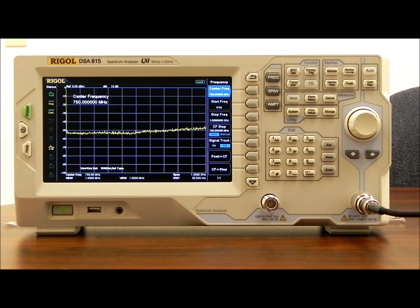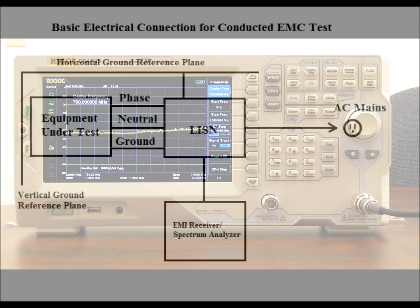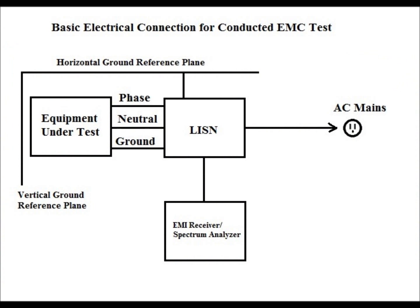I'm going to be stepping through a lot of the procedures with one of our spectrum analyzers, the DSA 815. I also am using some other instrumentation. In this slide you can see the equipment under test, with the phase, neutral, and ground connected through the power cord to the LISN. We also have the horizontal ground reference plane and vertical ground reference plane — conductors bonded together that are at least two times the area of the equipment under test, which helps isolate the EUT from capacitive coupling to anything in the room. The LISN is also connected through the AC mains as well as to the EMI receiver or spectrum analyzer — in this case, the DSA 815.